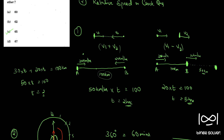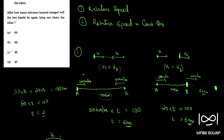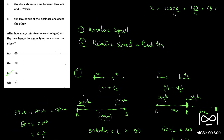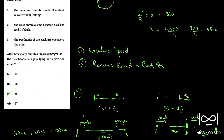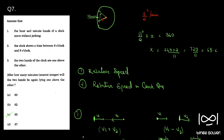I hope you understood what relative speed is and how we can use that concept to solve questions. If you have any doubt, please comment and I will try to do a better explanation video. Anyway, this is the solution to Question 7 — the answer is C, 65.